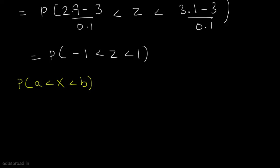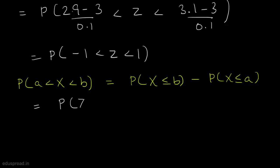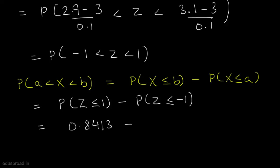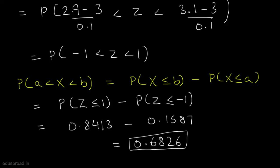Using the proposition for continuous random variables, P(a < X < b) = P(X ≤ b) − P(X ≤ a). Substituting values: (2.9 − 3) / 0.1 = −1 and (3.1 − 3) / 0.1 = 1, so we need P(−1 < Z < 1) = P(Z ≤ 1) − P(Z ≤ −1). From the standard normal table, these are 0.8413 and 0.1587, giving a desired probability of 0.6826. So the probability that the first machine produces an acceptable cog is 0.6826.